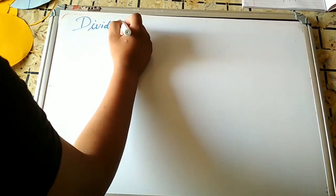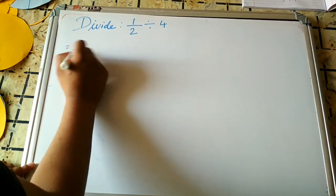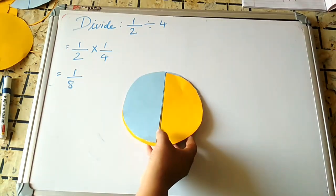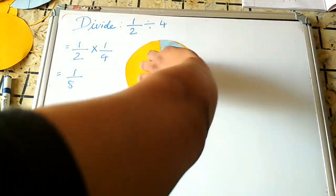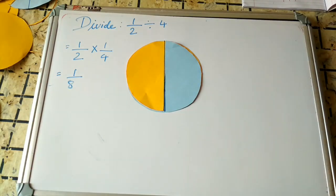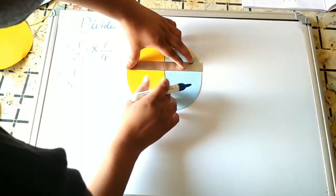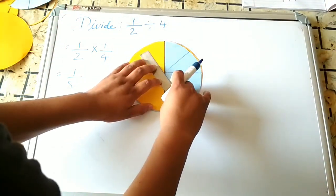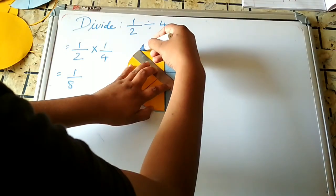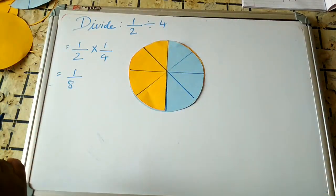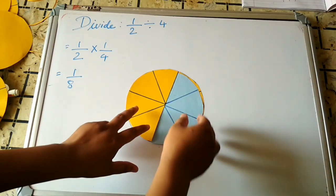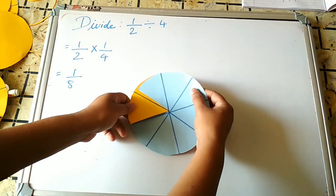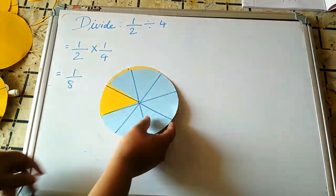The fourth and last operation is division: 1/2 ÷ 4. We change to multiplication and take the reciprocal of 4, which is 1/4. So numerator × numerator: 1 × 1 = 1, and denominator × denominator: 2 × 4 = 8, giving 1/8. In the activity, this is 1/2. We divide the half part into 4 equal parts using a pen and scale. The total becomes 8 equal parts of the whole. So 1/4th of the half part equals 1/8.